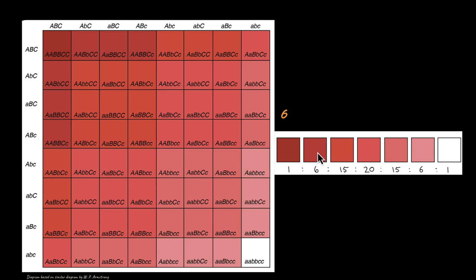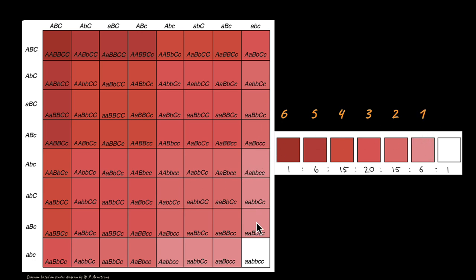The ratio of 6 is for the genotype with five dominant alleles. The 15 is for four dominant alleles. The 20 is for three dominant alleles. The 15 again is for two dominant alleles. The next ratio is for one dominant allele, and the last is for the genotype with zero dominant alleles.